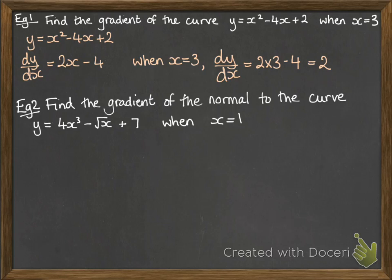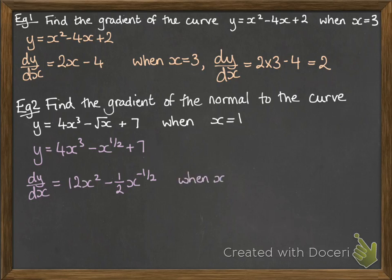Now we'll find the gradient of the normal to the curve when x equals 1 for this particular curve in example 2. I'm just going to rewrite that as powers so it's easier to differentiate. So differentiate each term one at a time and now substitute in x equals 1.